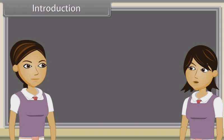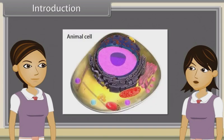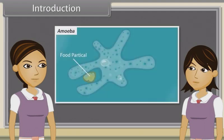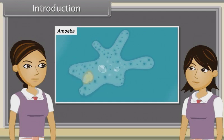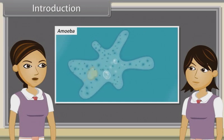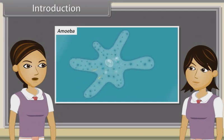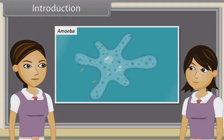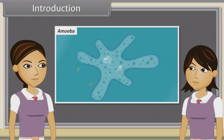Hey Ankita, we know that the cell is the structural and functional unit of life, but do you know what does it actually mean? It means a single cell can perform all basic functions of life — for example, movement, intake of food and respiratory gases, respiration and excretion. You are right. So, come let's start our new chapter: Cell the Unit of Life.